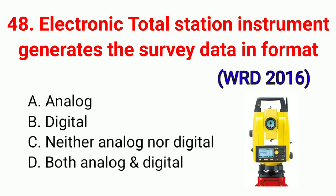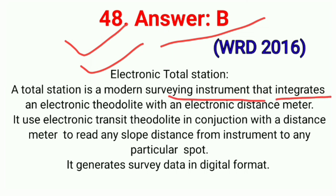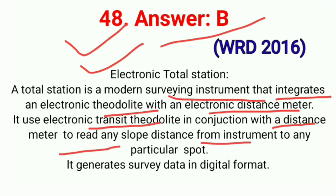Question No. 48. Electronic total station instrument generates survey data in what format — correct option B: Digital. A total station is a modern survey instrument that integrates an electronic theodolite with an electronic distance meter. It uses the electronic transit theodolite in conjunction with the distance meter to read any slope distance from the instrument to any particular spot. It generates survey data in digital format. Correct option B.